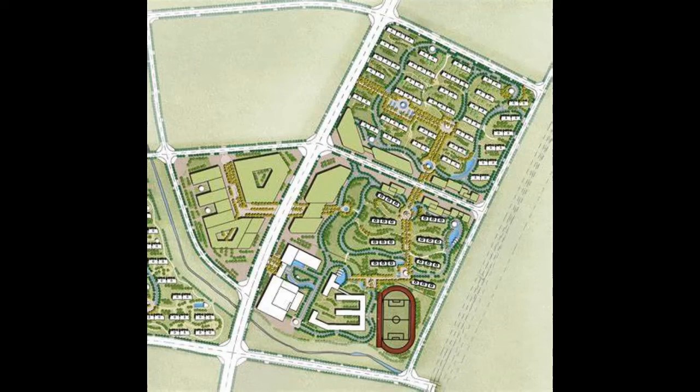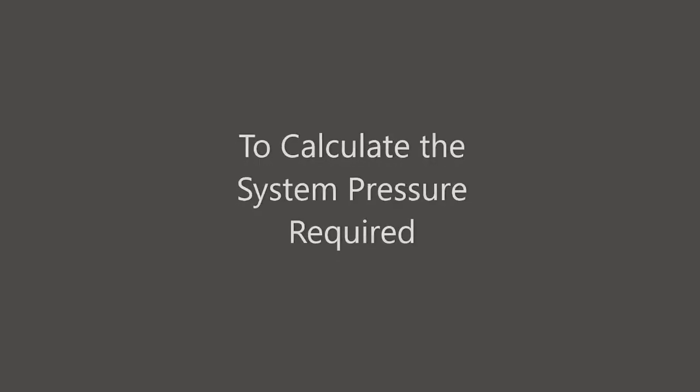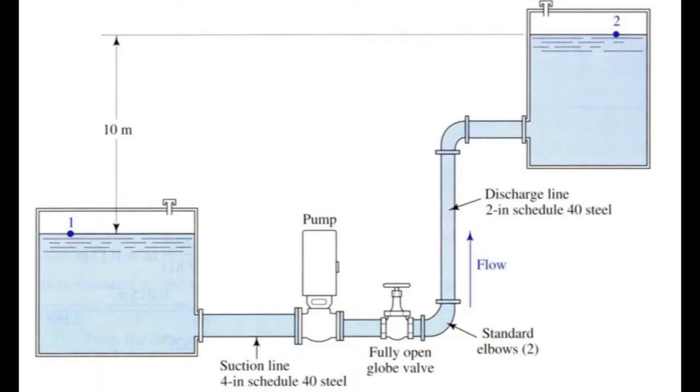In the industry at most of the cases you will be provided with demand or flow requirements for the development in the master plan. However, this is not enough information for you to proceed further with the design of a pumping system. Once you are given the flow data, the next step is to determine the pump pressure or head required to deliver the flow or demand to the development.